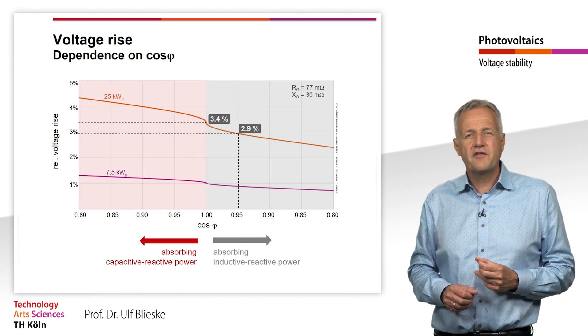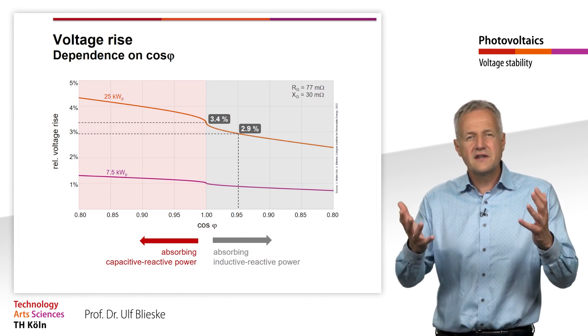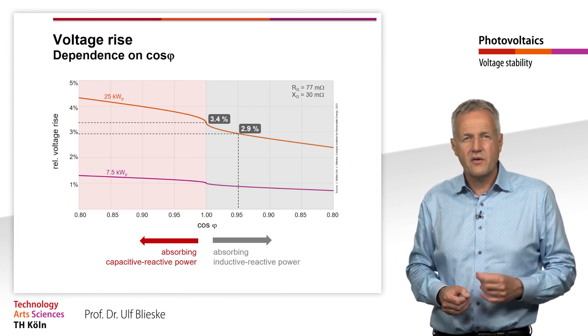Setting such a phase shift at the inverter means nothing else than that it absorbs inductive reactive power from the grid in addition to feeding in active power.